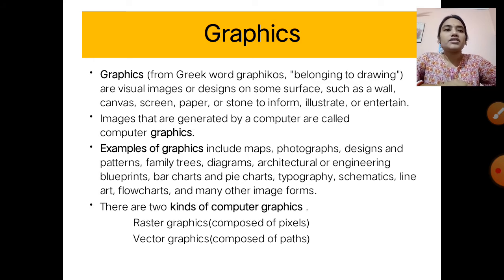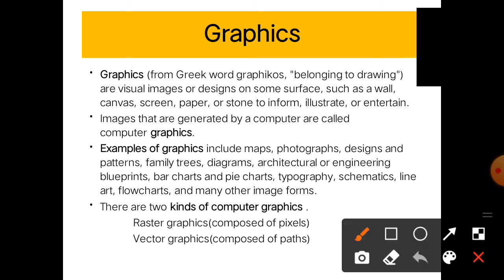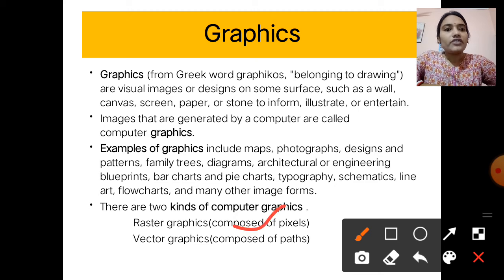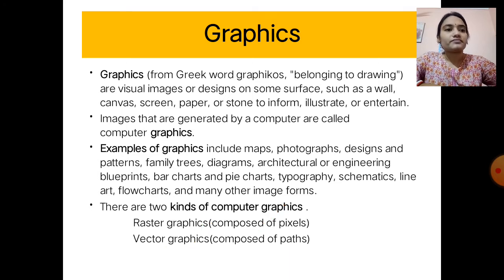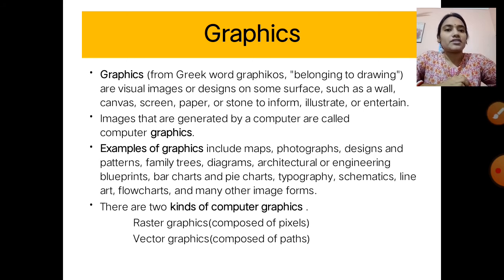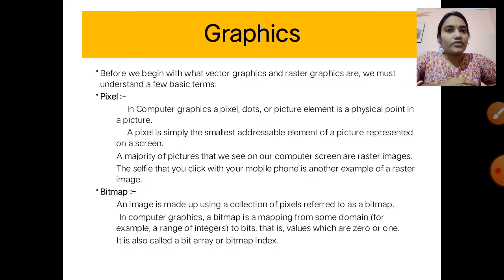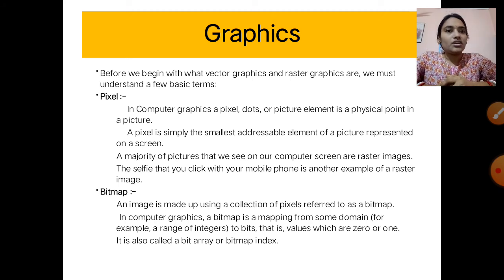These are the examples of graphics. There are two types of computer graphics: the first is raster graphics and the second is vector graphics. Before discussing these types, we need to understand what is a pixel and what is a bitmap.